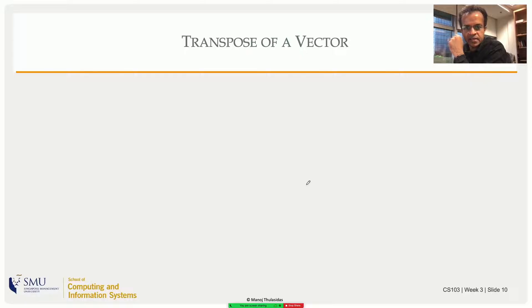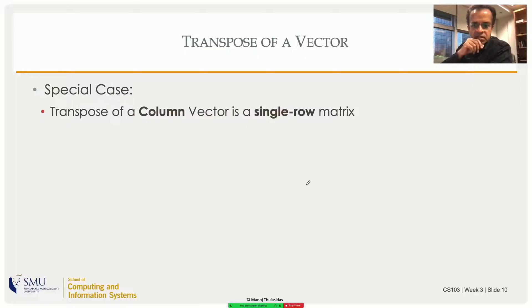Now there's a special case. If you have a column vector, which is a single column matrix, and if you take the transpose, it becomes a single row matrix because the columns become rows. So if you take x, that is a member of R^n, x transpose becomes a member of R^(1 by n), one row and n columns. So that is a row matrix.